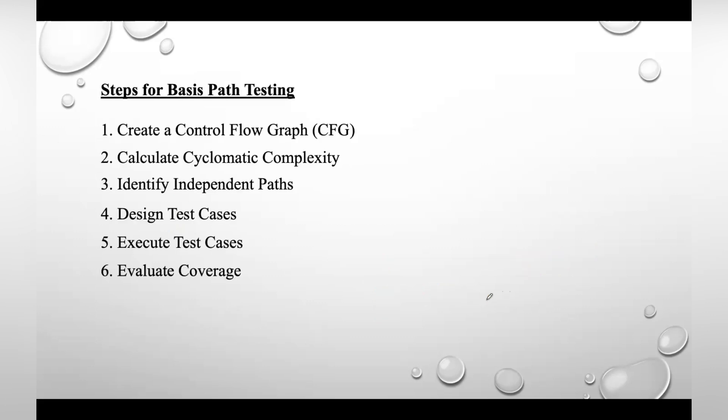These are the steps for basis path testing. First, you need to create a control flow graph—develop a CFG for the program to visualize the flow of control. Then determine the cyclomatic complexity using the formula to understand how many independent paths need to be tested.